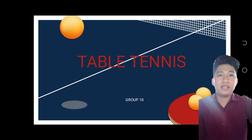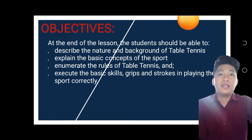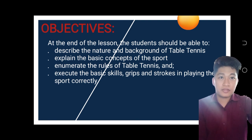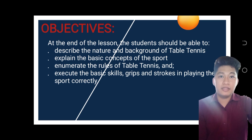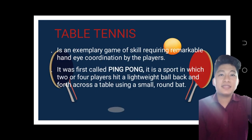Now that you have an idea, let's proceed. Based on the activity given, our lesson is all about table tennis. Our objectives: at the end of this lesson, students should be able to describe the nature and background of table tennis, explain the basic concepts of the sport, enumerate the rules of table tennis, and execute the basic skills — grips and strokes — in playing the sport correctly.